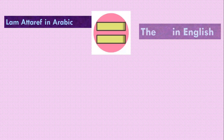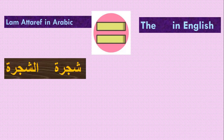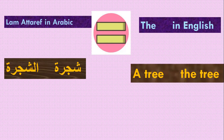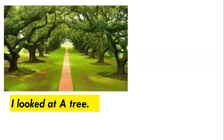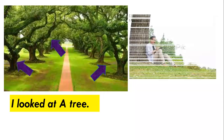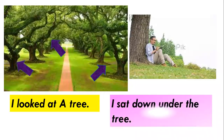Lam-Altarif in Arabic equals 'the' in English. For example, 'shajaratun' means 'a tree,' and 'al-shajara' means 'the tree.' When I say 'I looked at a tree,' you don't know which tree. But when I say 'I sat down under the tree,' that means you know which tree.